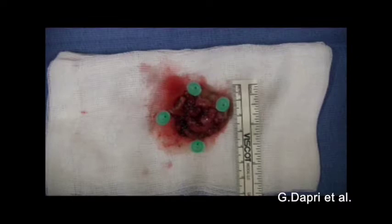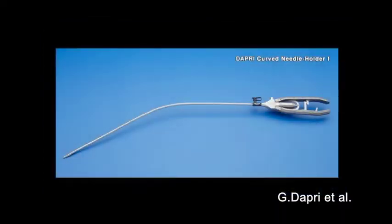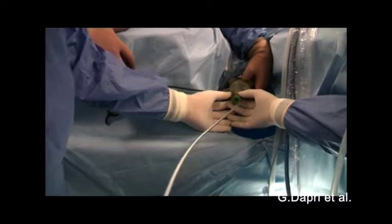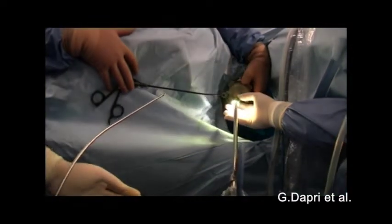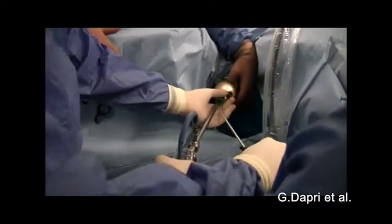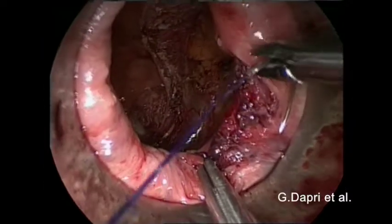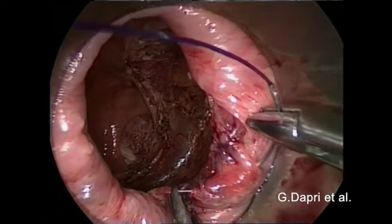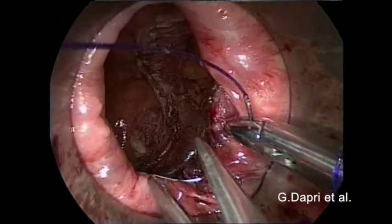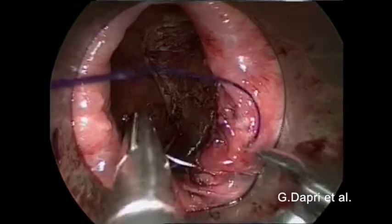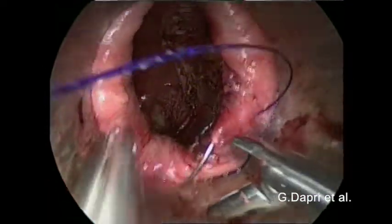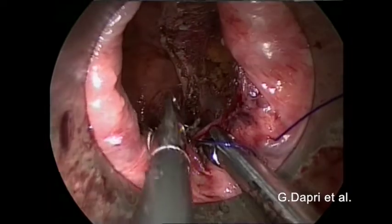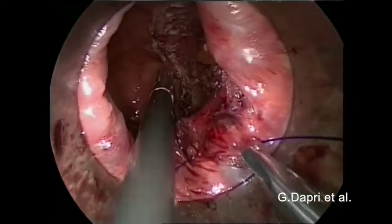A monocurved reusable needle holder is chosen and an absorbable barbed suture is inserted at the 3 o'clock port orifice. The rectal wall is closed starting at the central point and going firstly on the left lateral side. Since the sectioned tissue always retracts, the first bites are placed on the dentate line. Full thickness bites are placed and the suture is kept well under tension.